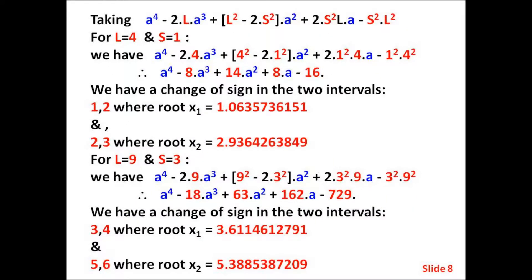Taking the generalized fourth-degree polynomial we have just derived, for l equals 4 and s equals 1, we end up with: a⁴ minus 8a³ plus 14a² plus 8a minus 16. We have a change of sign in the two intervals (1, 2), where root x₁ equals 1.06357..., and (2, 3), where root x₂ equals 2.93642...